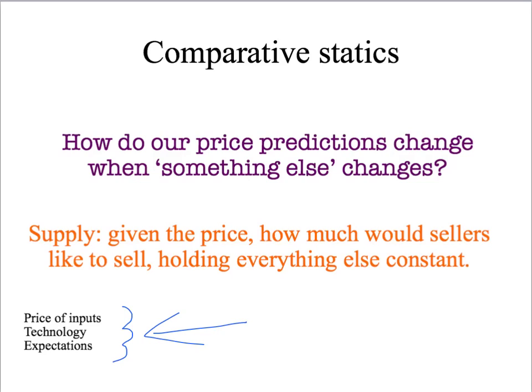So our comparative static analysis is going to ask how does the equilibrium price and quantity change in a market when there is a change in the price of inputs, or a change in technology, or a change in sellers' expectations. Each of those will shift the supply curve and alter our predicted price and our predicted quantity.